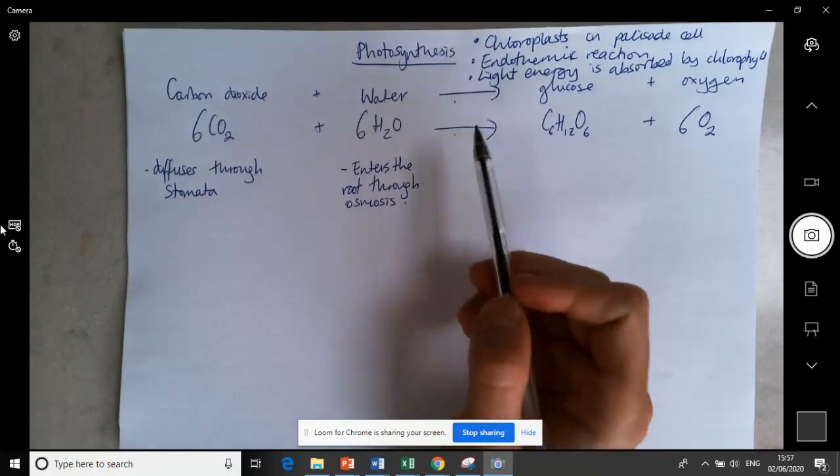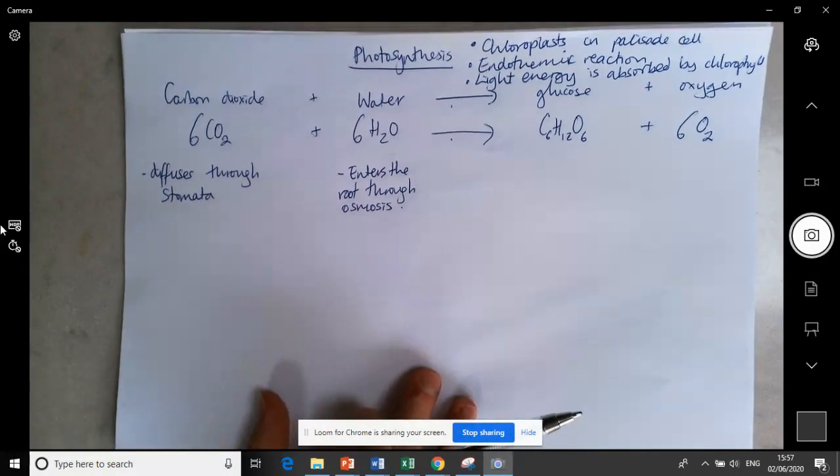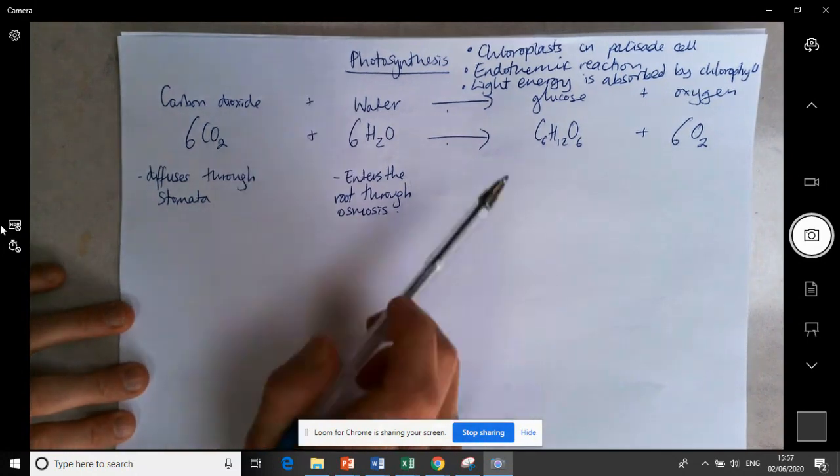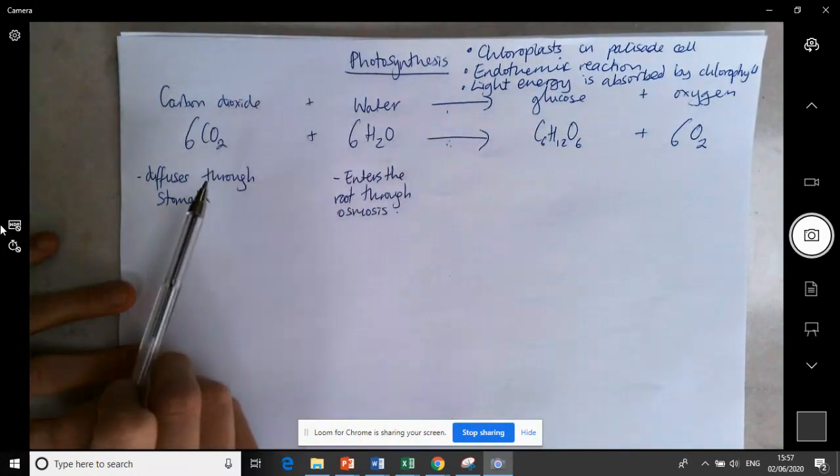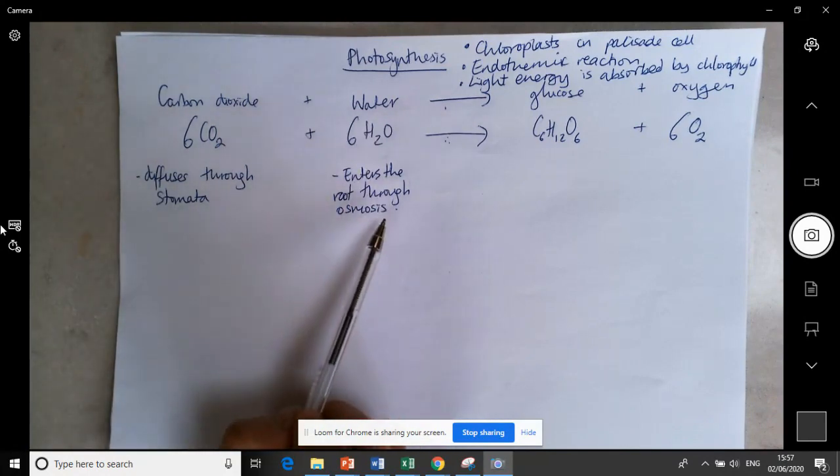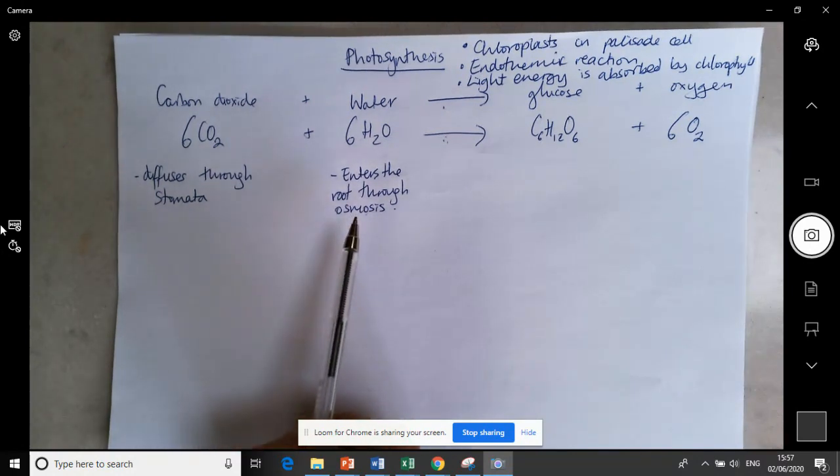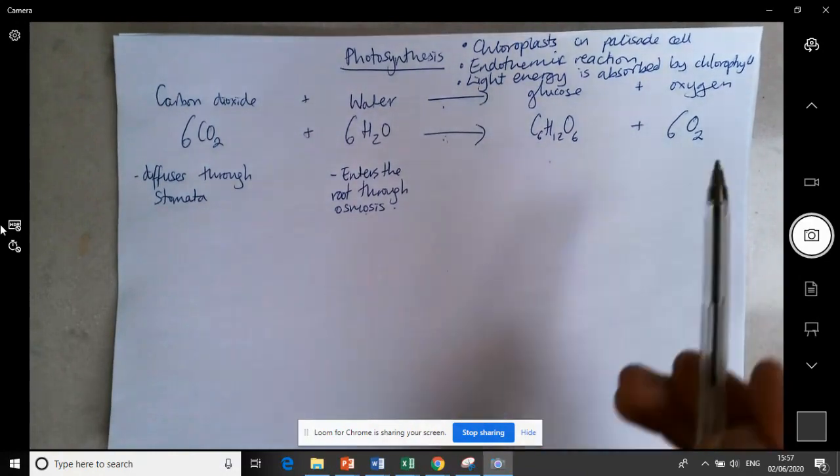Some people write light on the arrows. Please do not write light on the arrows because you don't get marks for that and in fact you would negate a mark. So we've got our carbon dioxide diffusing through the stomata, water entering the root via osmosis, and both of these things are going to go into your chloroplasts.